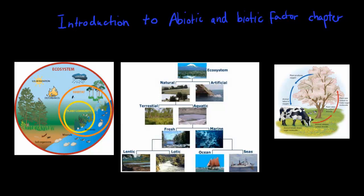Welcome to the introduction video for the abiotic and biotic factor chapter. In this chapter, we will talk quite a bit about ecosystems. Ecosystems are just areas of the actual earth itself. For example, we've got terrestrial ecosystems, which are land ecosystems, and we've got aquatic ecosystems, which are the ocean and lakes.